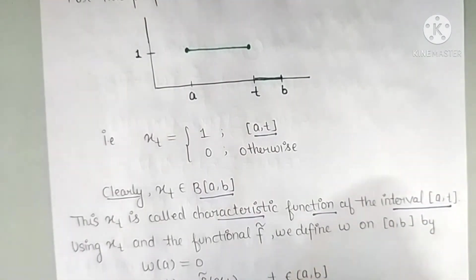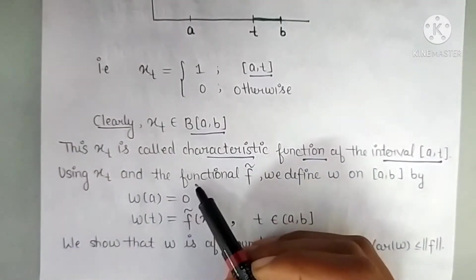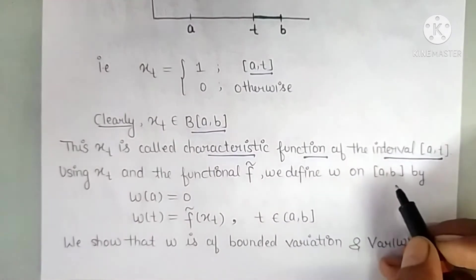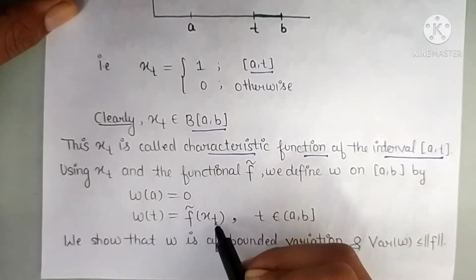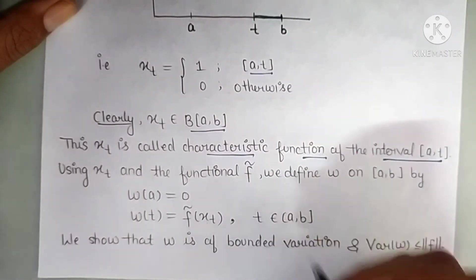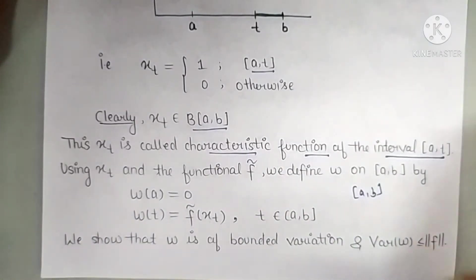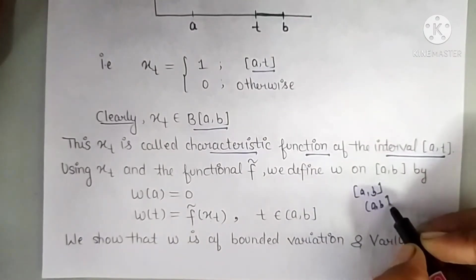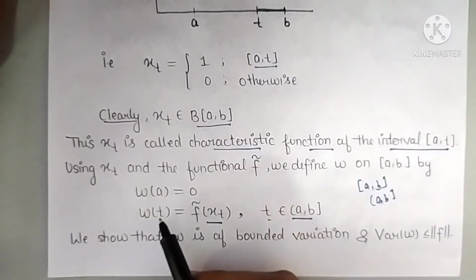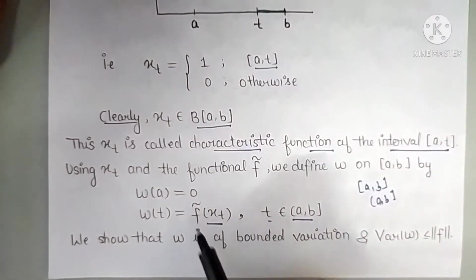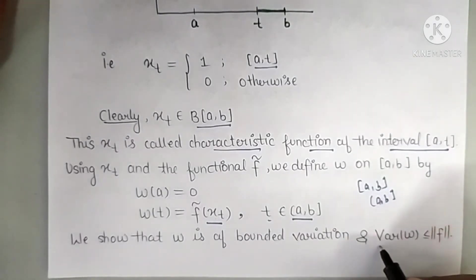Using x_t and the functional F̃, we define w on the closed interval [a,b] as: w(a) = 0, and w(t) = F̃(x_t) for t ∈ (a, b]. So for all points other than a, the value of w is the image of x_t under F̃.